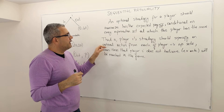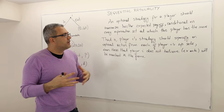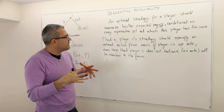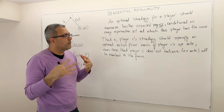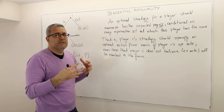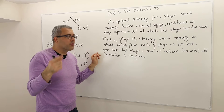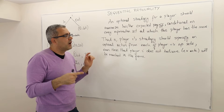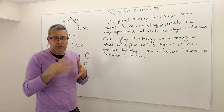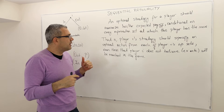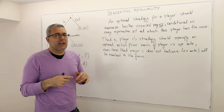Alternatively, a player I's strategy should specify an optimal action from each of player I's information sets, even those that player I does not believe ex ante — before the game starts — will be reached in the game.